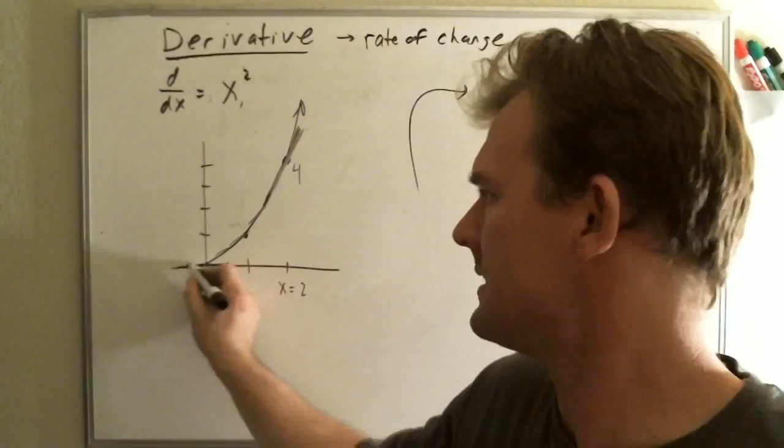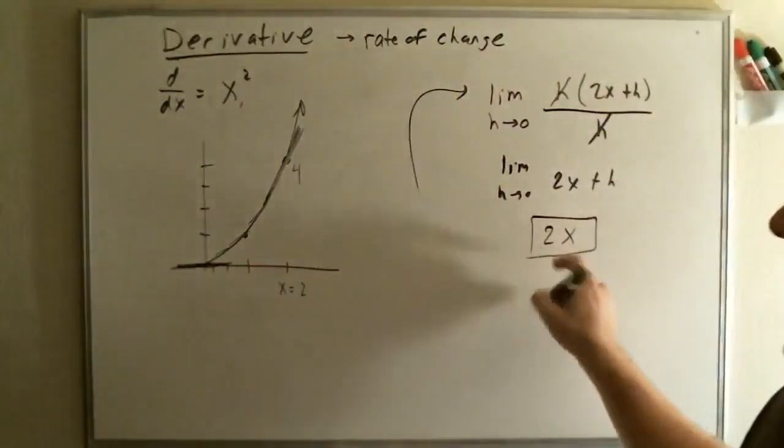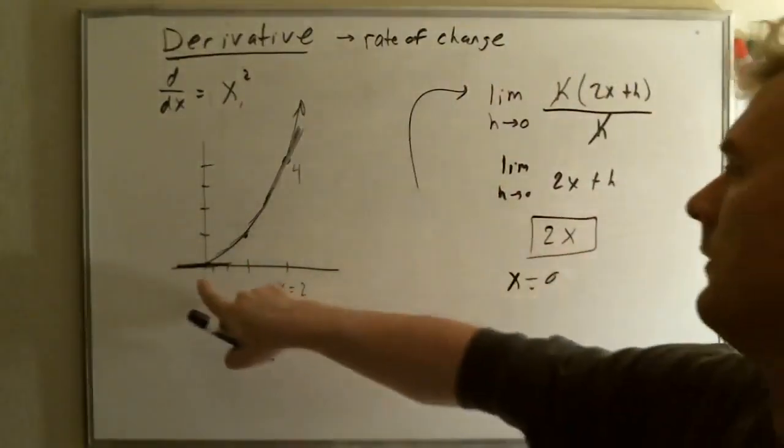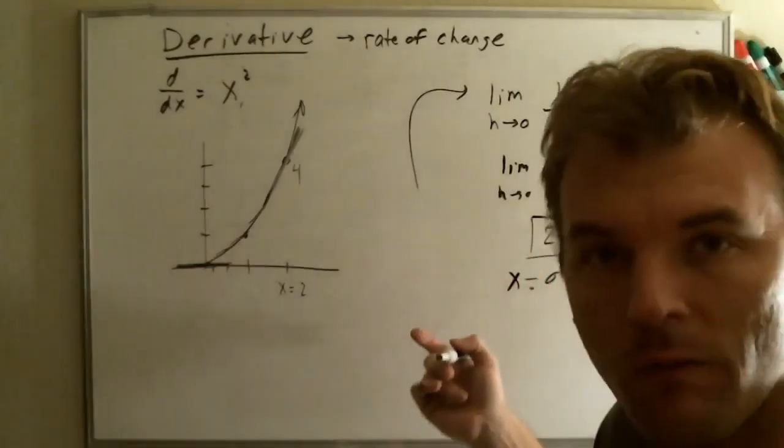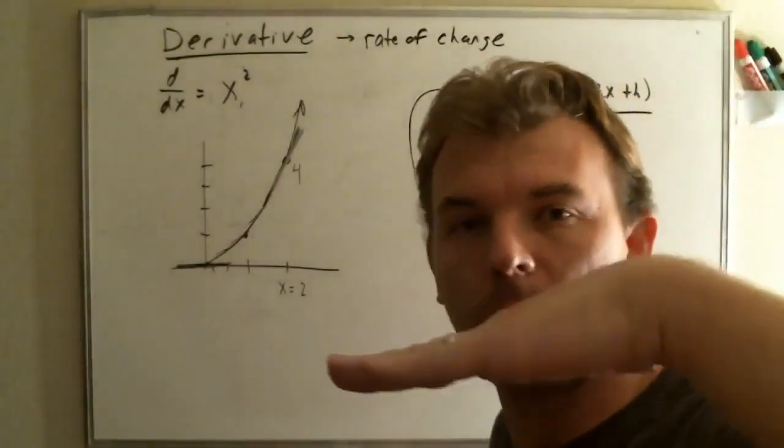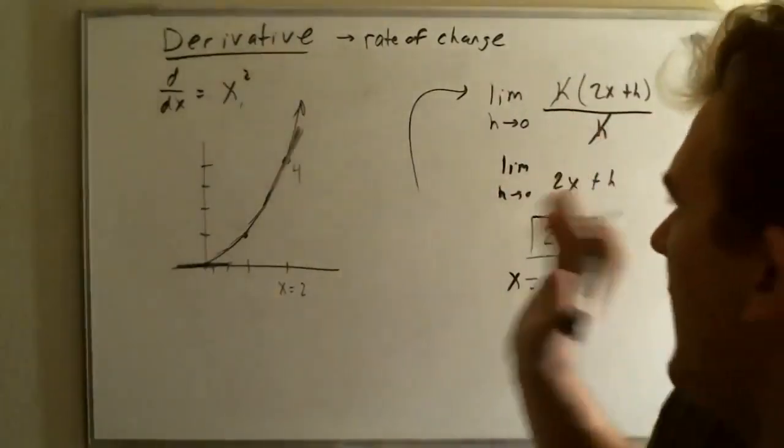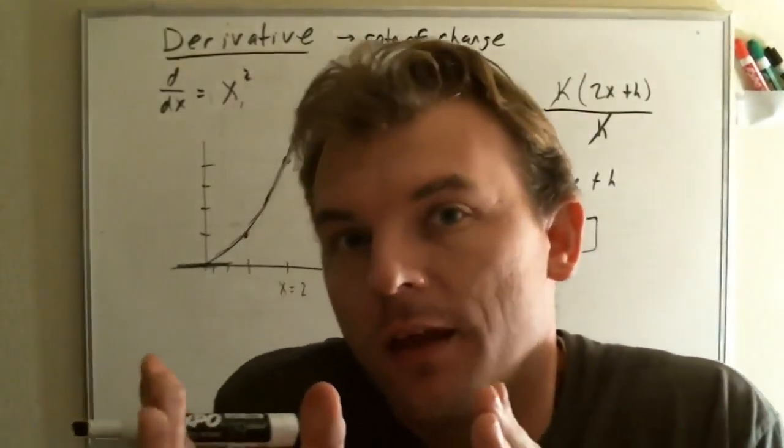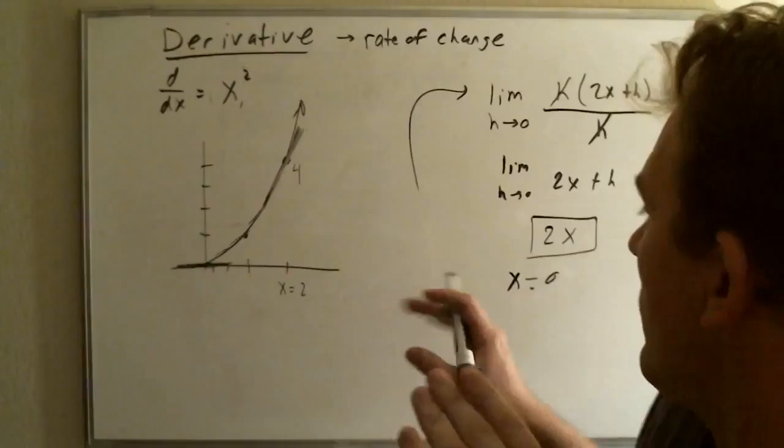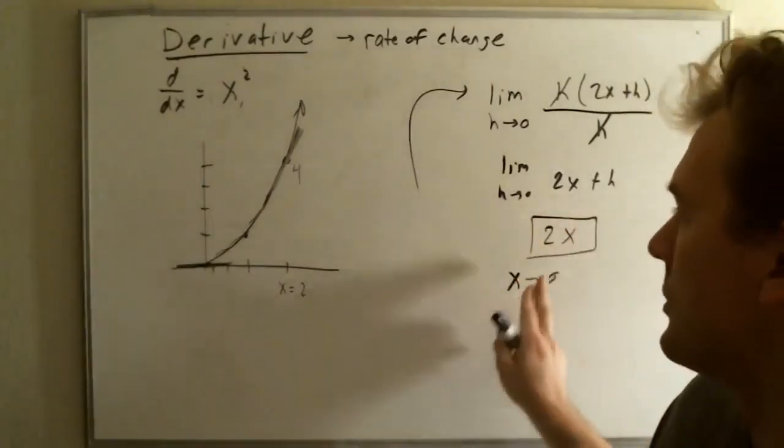And then, what happens at 0? Well, if you put in x equals 0, you have 0. So, you have a horizontal slope, which is pretty much no slope. So, that's kind of what the derivative is. It's just really telling you the rate of change at a certain location.